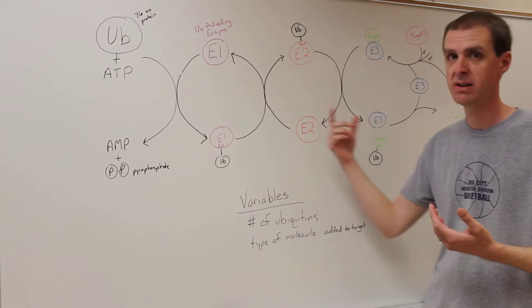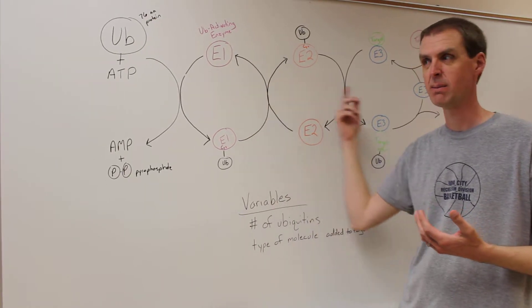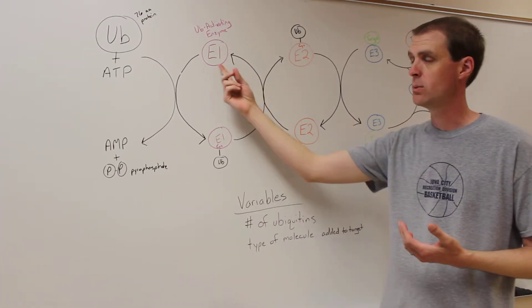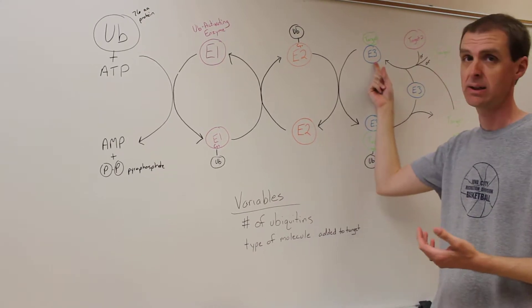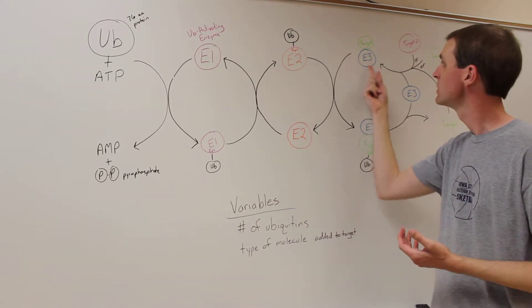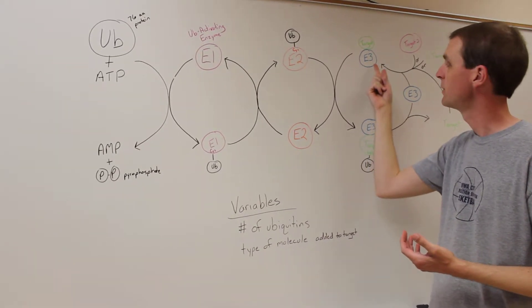And in essence it's an enzyme that is the third enzyme in an enzyme cascade. So there's an E1 protein, an E2 protein, and an E3 protein. The proteins we study are these E3s, the blue ones.